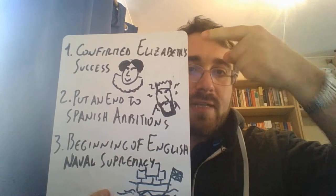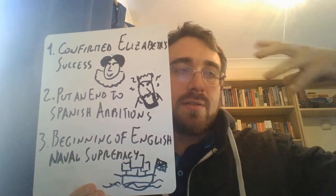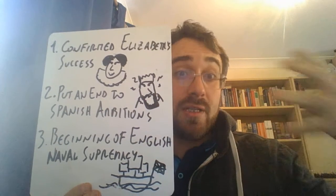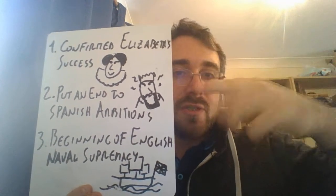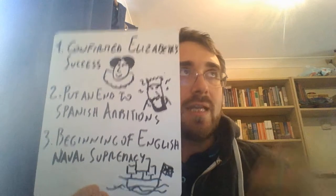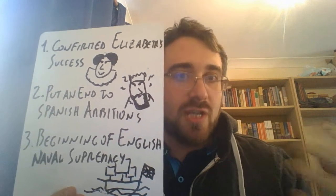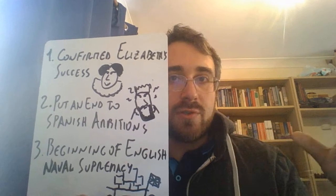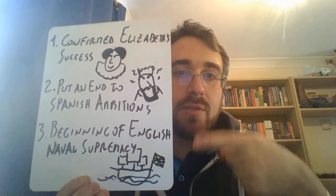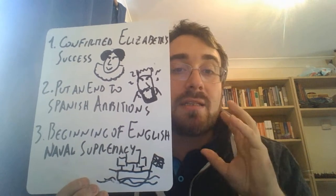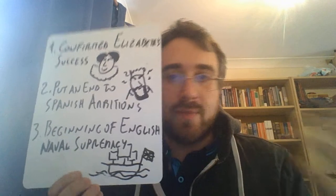First, it confirmed Elizabeth's success as a ruler — this is a short-term consequence, impacting English politics in the late 16th century. Second, it marked an end to Spanish ambitions in the region — a medium-term consequence with impacts measured in decades rather than years, changing how the world looked in the following decades. Finally, the long-term consequence, spanning centuries, is the beginning of an English and later British naval supremacy over pretty much every waterway in the world.